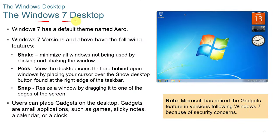The Windows desktop default theme was called Aero. Windows versions with this theme had the following features: shake, where you could take a window and shake it to minimize all others; peek, which lets you view desktop icons behind open windows by placing the cursor over the show desktop button on the right edge of the taskbar; and snap, where you resize a window by dragging it to one of the edges of the screen.